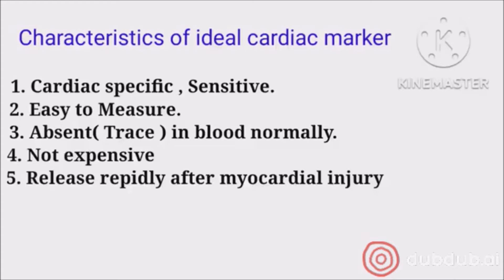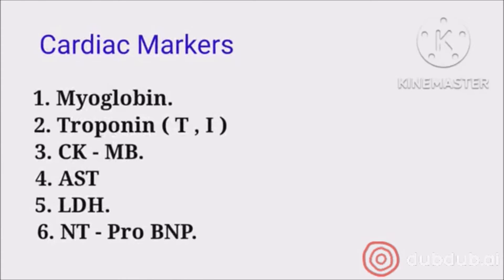The markers used as cardiac markers are: first, myoglobin; second, troponin; third, CK-MB; fourth, AST; fifth, LDH; and sixth, NT-proBNP. We will cover all these markers in this lecture.